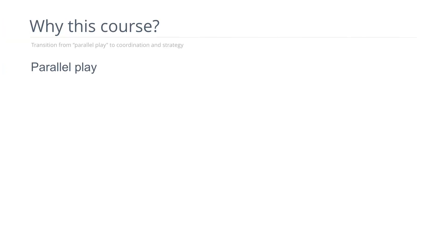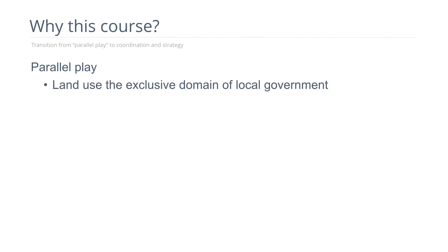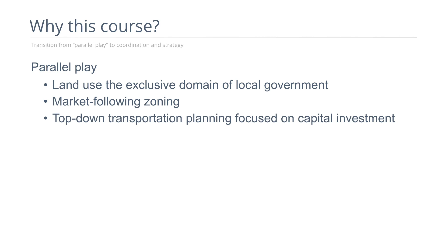Why this course? I think we're in a historical change from a way of looking at land use and transportation as parallel play — the idea of kindergarteners playing beside each other but not with each other. And parallel play is how we used to do land use and transportation planning. Land use was the exclusive domain of local government, and zoning generally followed market demands. Transportation was more a top-down endeavor influenced by federal, state, regional, and county initiatives, and the two realms were not closely coordinated.